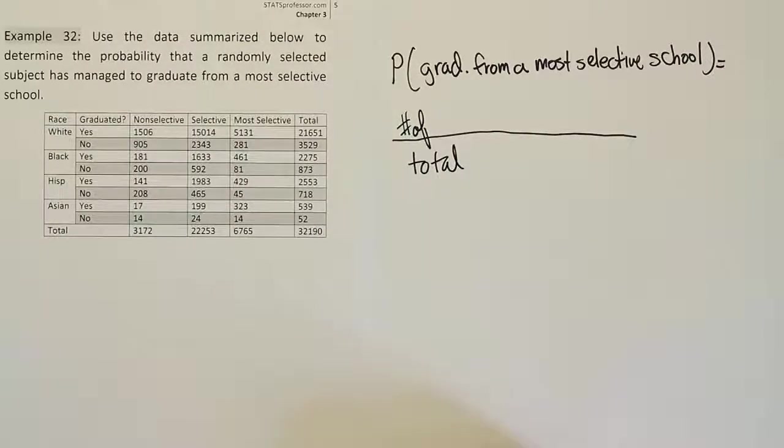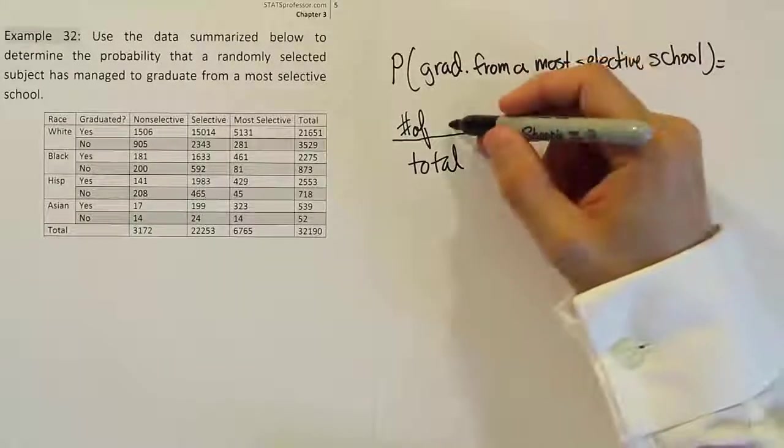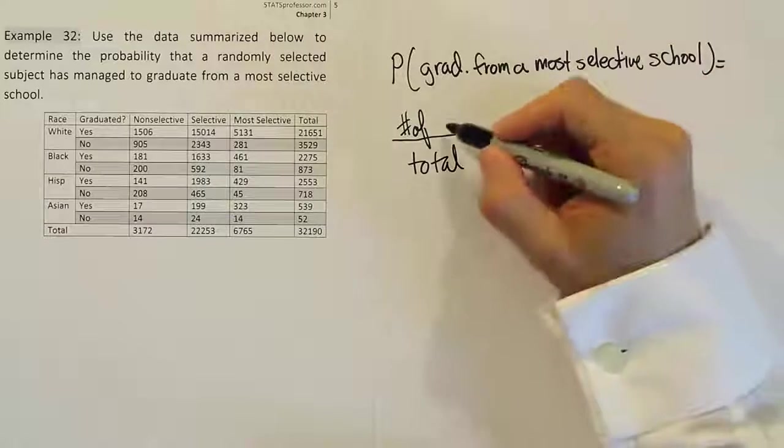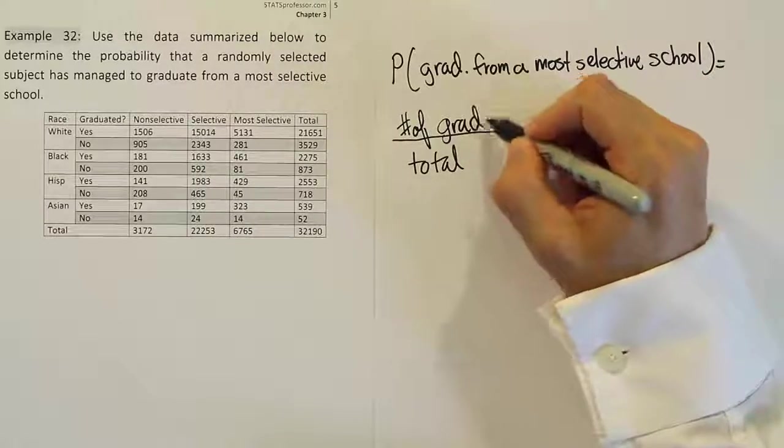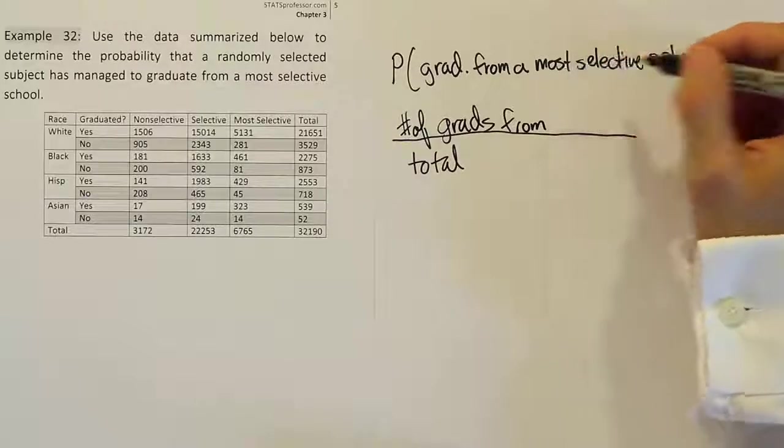Now for us, the number of in this case is the number of whatever we have here. So the number of graduates from most selective schools. The number of grads from, I'm going to abbreviate this MSS, most selective schools.